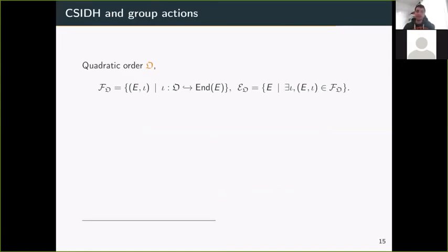The basis of the uber isogeny assumption are quadratic orders and their links with supersingular elliptic curves. In particular, we can define two following sets. First, F_O, the set of embeddings from O to the endomorphism ring of supersingular elliptic curves. Then E_O, the set of curves admitting such an embedding. There's a very nice mathematical property that says we have a group action from the class group of O, which is an Abelian group. We have an Abelian group action on this set of embeddings, written as the star operation.